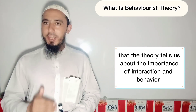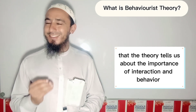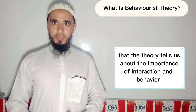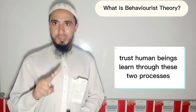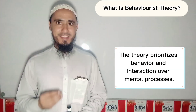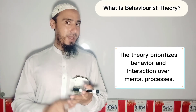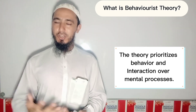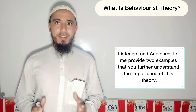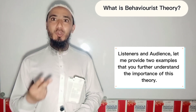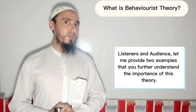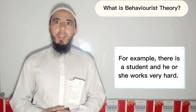As I told you, the theory tells us about the importance of interaction and behaviour — that human beings learn through these two processes. The theory prioritises behaviour and interaction over mental processes. Let me provide two examples so that you further understand the importance of this theory.